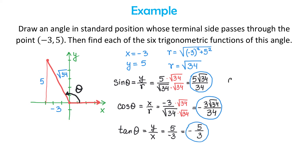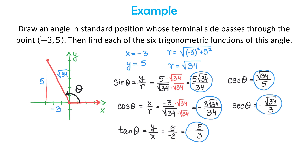The next function is cosecant of theta. Because cosecant is the reciprocal of sine, we flip 5 over √34 to get cosecant θ = √34 over 5. Secant is the reciprocal of cosine, so we flip −3√34 over 34, giving secant θ = −√34 over 3. Finally, cotangent is the reciprocal of tangent: flipping −5/3 gives cotangent θ = −3/5. The problem is now complete.